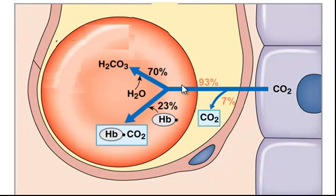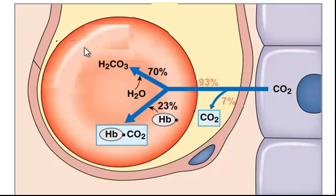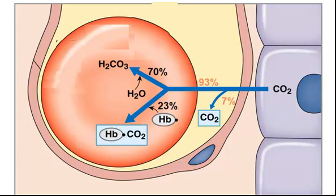Once the carbon dioxide is inside the red blood cells, 70 percent of it will combine with water to make carbonic acid — formed by the combination of water and carbon dioxide. About 23 percent of that carbon dioxide will combine with hemoglobin, forming a carbon dioxide–hemoglobin compound.